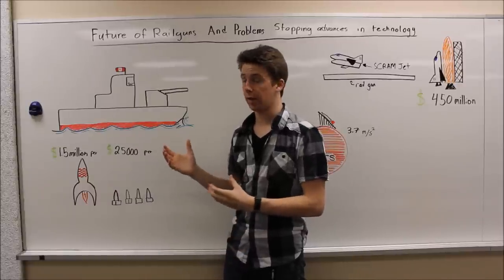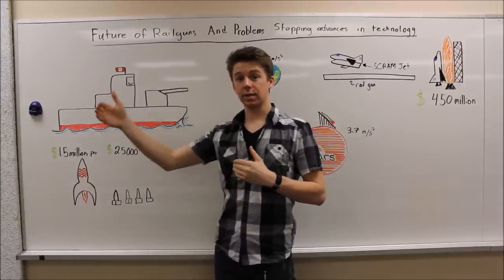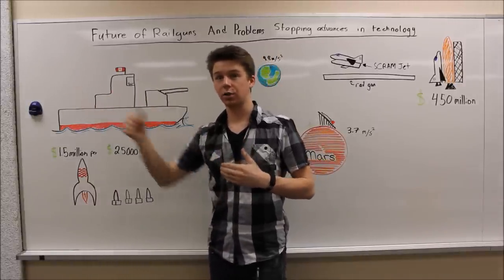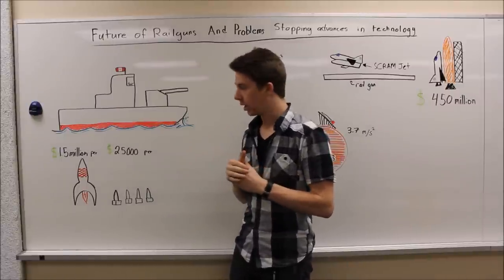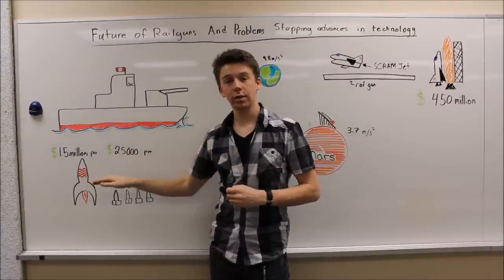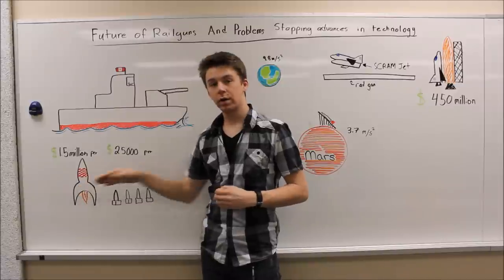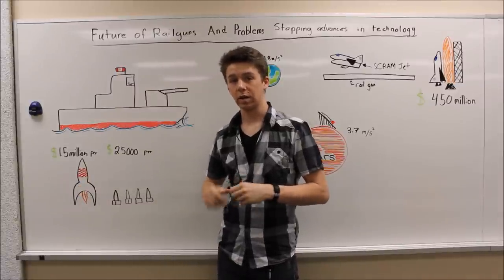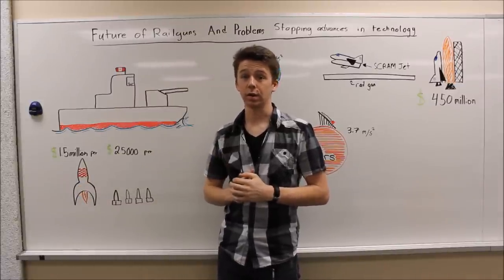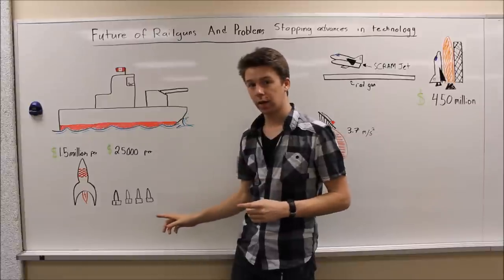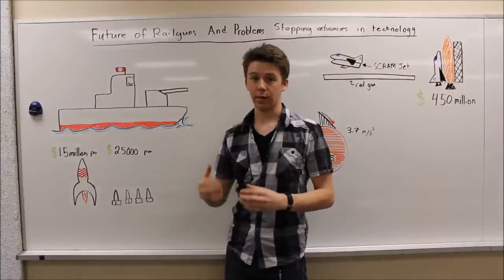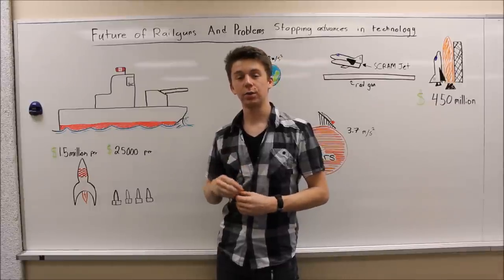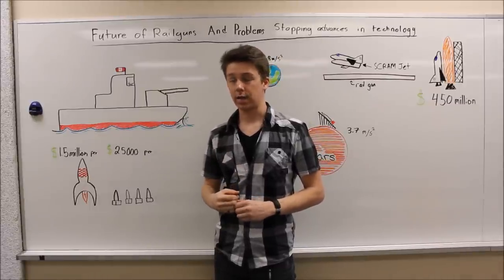Rail guns, on the other hand, also have that distance. They will be able to fire shells up to 250 kilometers. This is an exceptional feat, especially since to fire one Tomahawk cruise missile, it costs $1.5 million. To fire one rail gun salvo, it costs $25,000. This means that you can shoot six times the munitions as the current system.